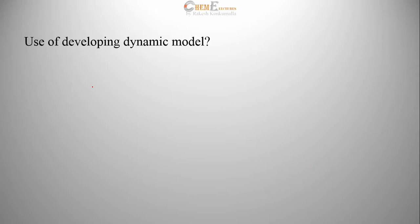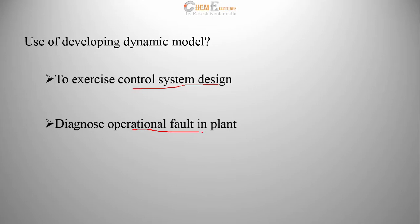What is the use of developing dynamic model? To exercise control system design. For control system design, first step is to develop dynamic model of the process because when there is change in input, control system tries to negotiate the disturbed processes and brings back to new steady-state. So to do these activities, it needs a dynamic model. To diagnose operational fault in a plant and to run the plant safely.